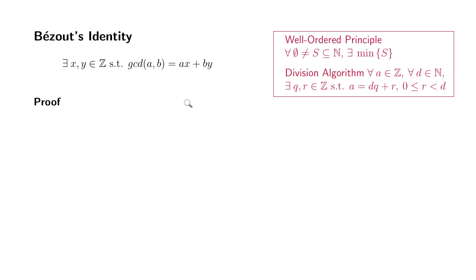Before we prove this, I'm going to borrow a couple of results. The first one is the well-ordering principle, which basically says that if you have a non-empty subset of natural numbers, you can always find the minimum element. The second one is the division algorithm: if you divide integer a by a natural number d, you can always express a as d times quotient q plus remainder r, where r is always greater than or equal to 0 and strictly less than d.